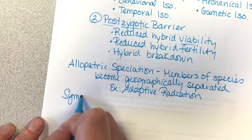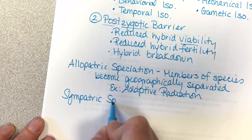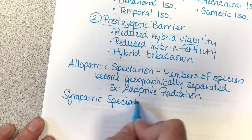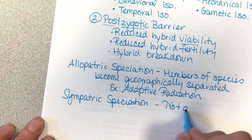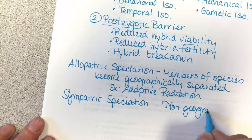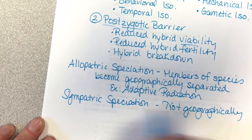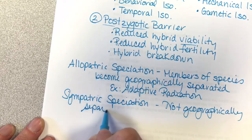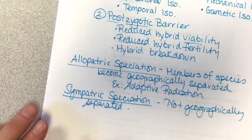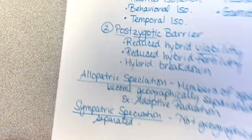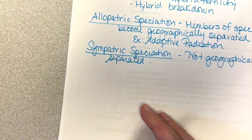The second is sympatric speciation, where the organisms are not geographically separated. That's the main difference. Review that and look at the examples so you know the difference between those.